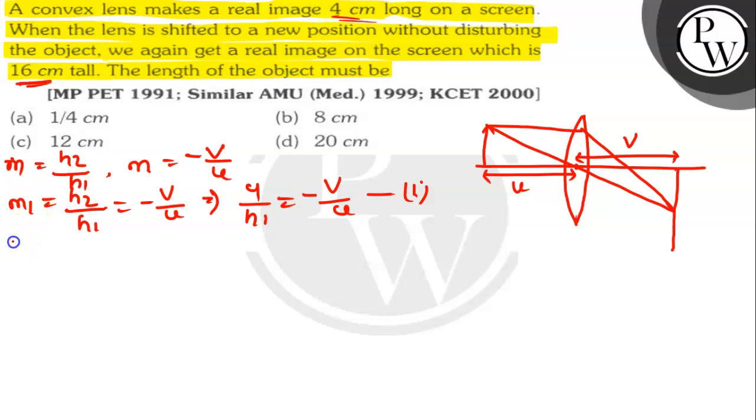So here m2 will be h2 by h1, which equals minus u by v. On substituting the corresponding values, we have 16 by h1 equals minus u by v. This is equation 2.